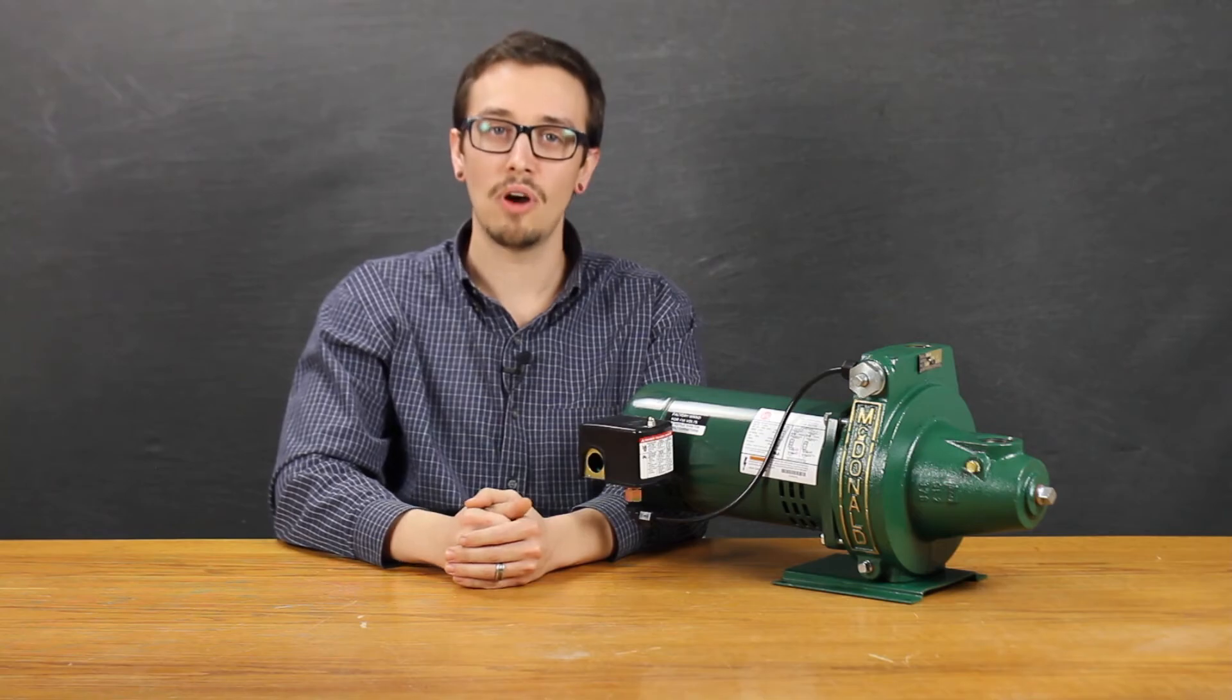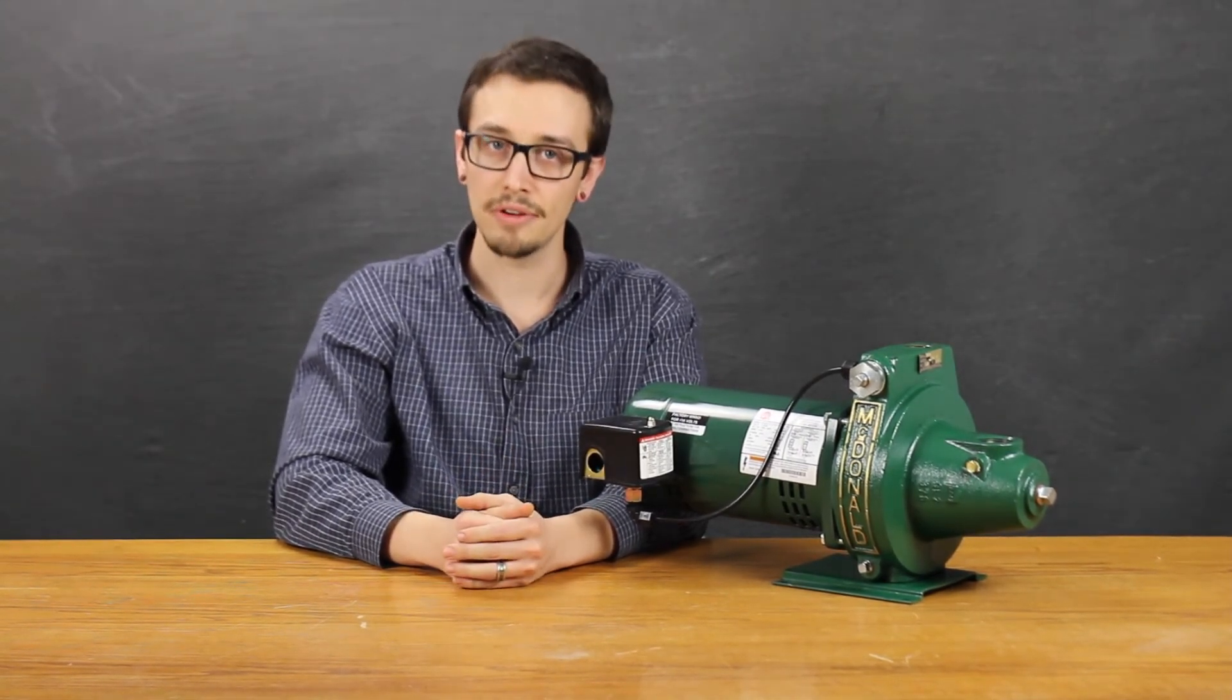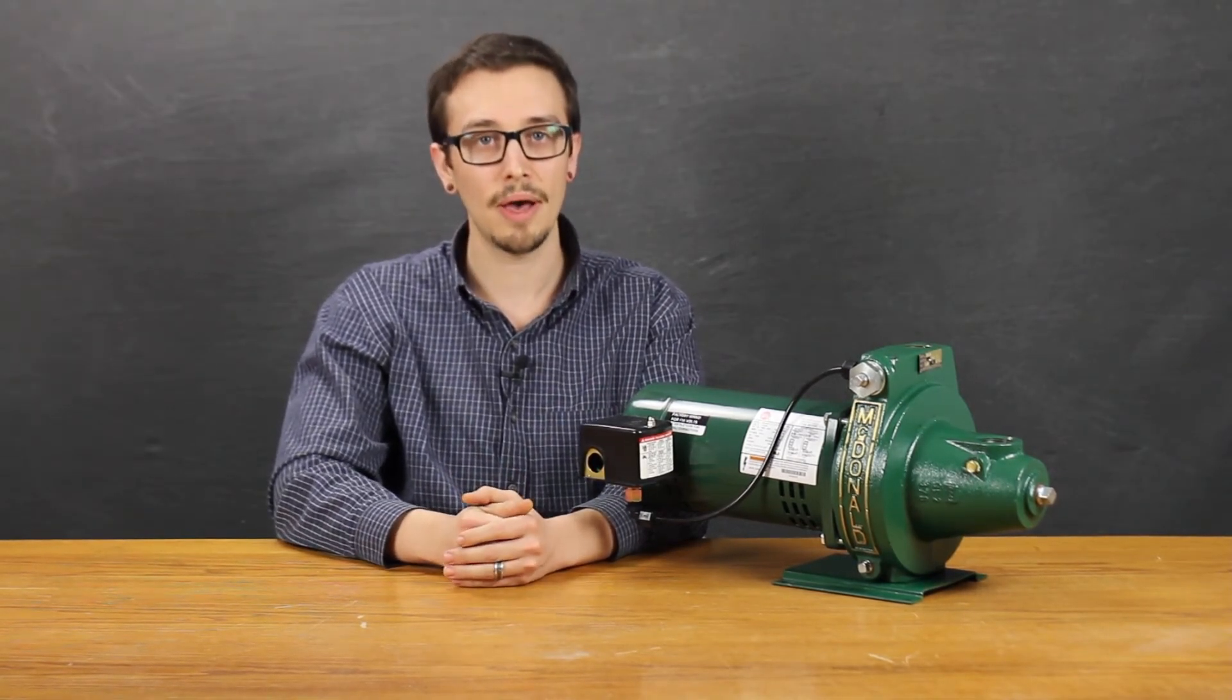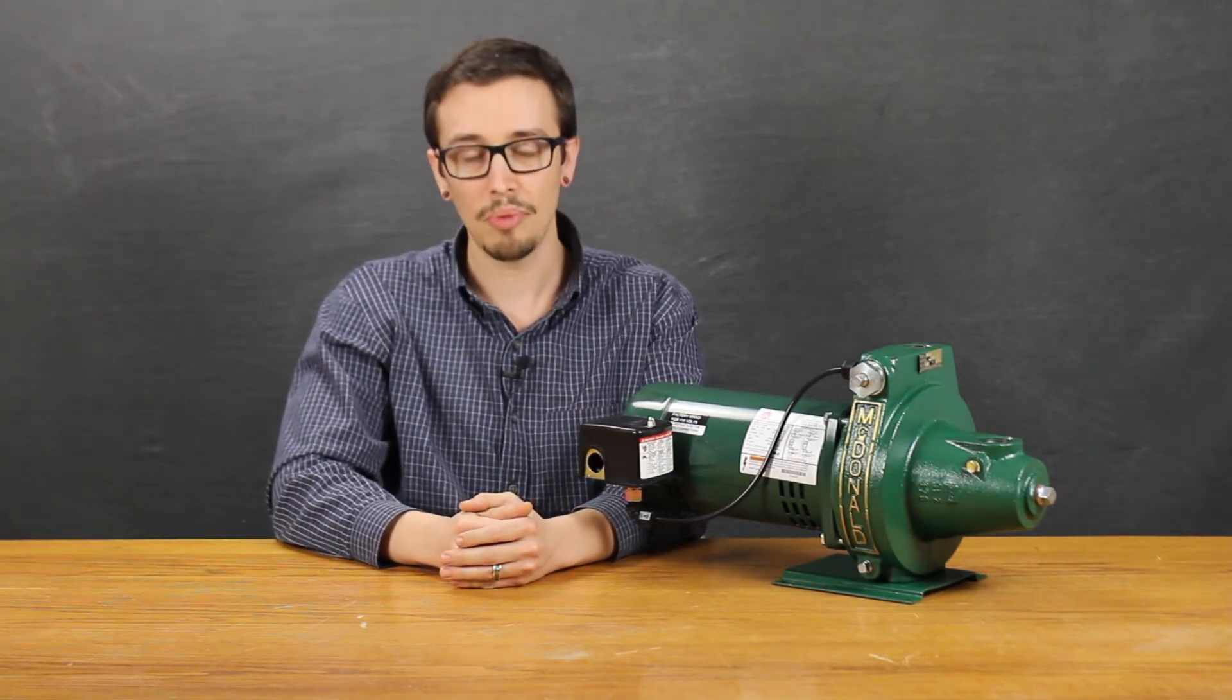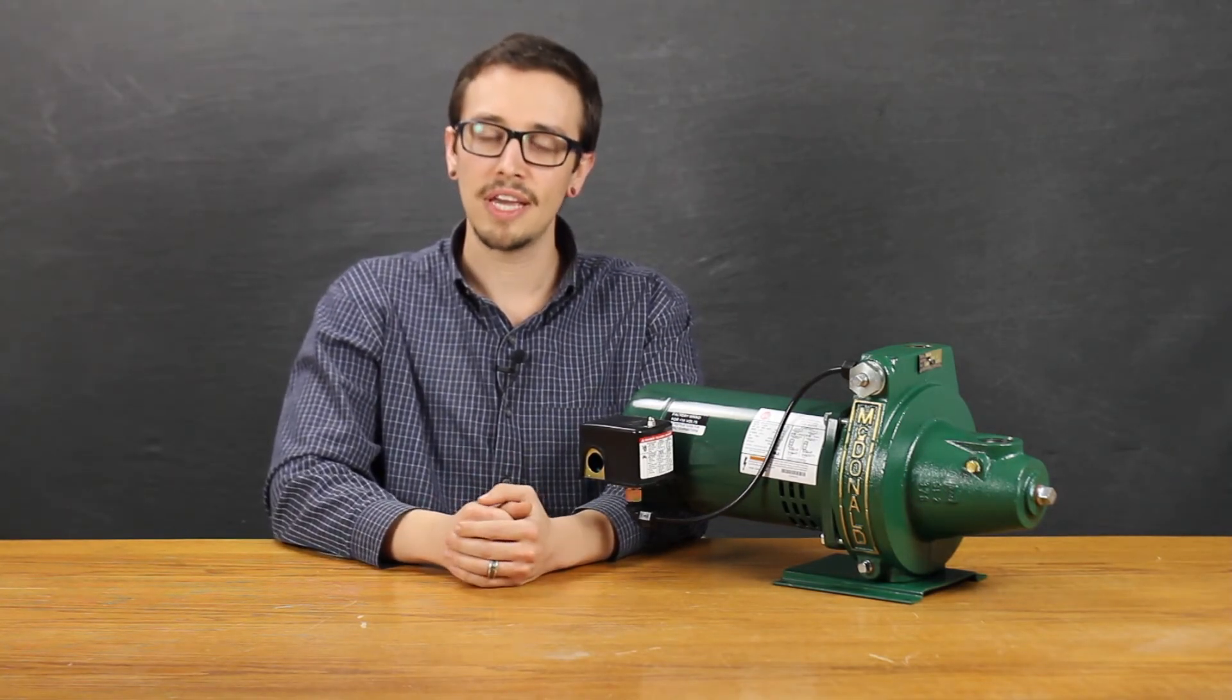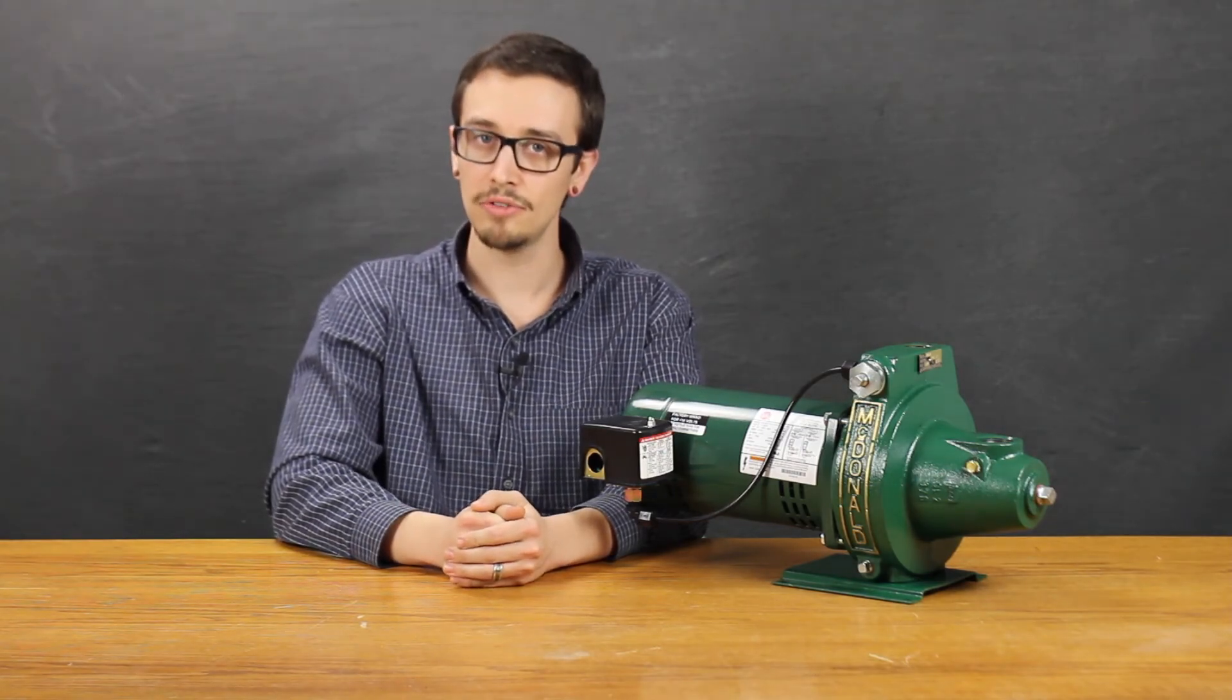The motors on all of these pumps are single phase open drip proof type motors or ODP as they're commonly referred to and run at a constant 3500 rpm. They come standard in a dual voltage configuration, meaning that you can easily switch the pump from 115 to 230 volt. The motor of this pump comes with ball bearings and a standard 5.8 inch ceramic carbon rotating mechanical seal.